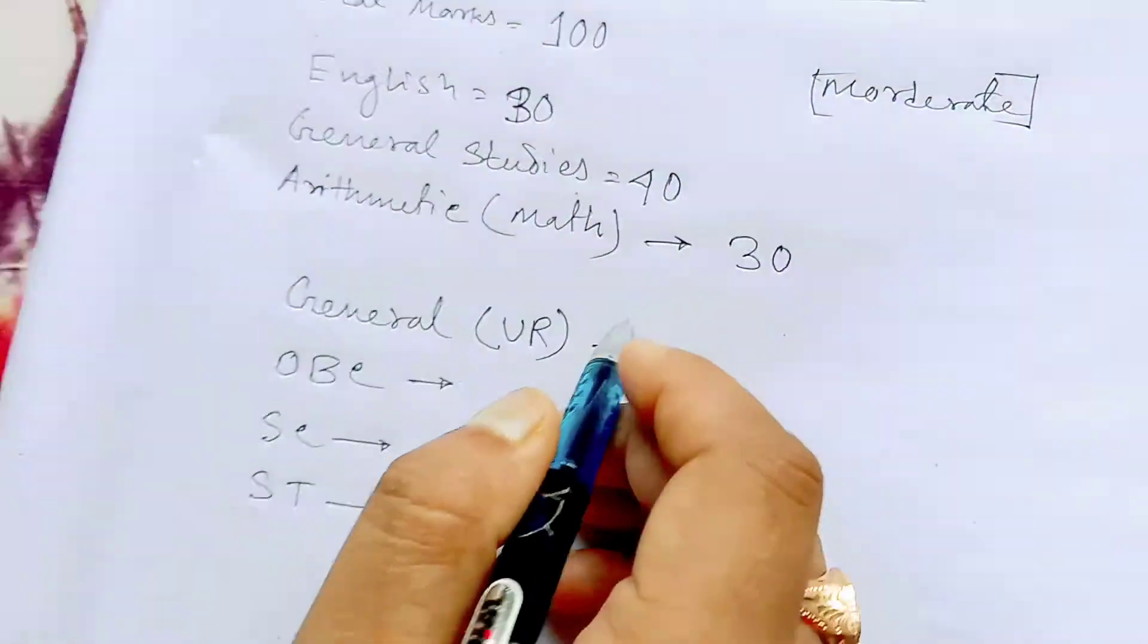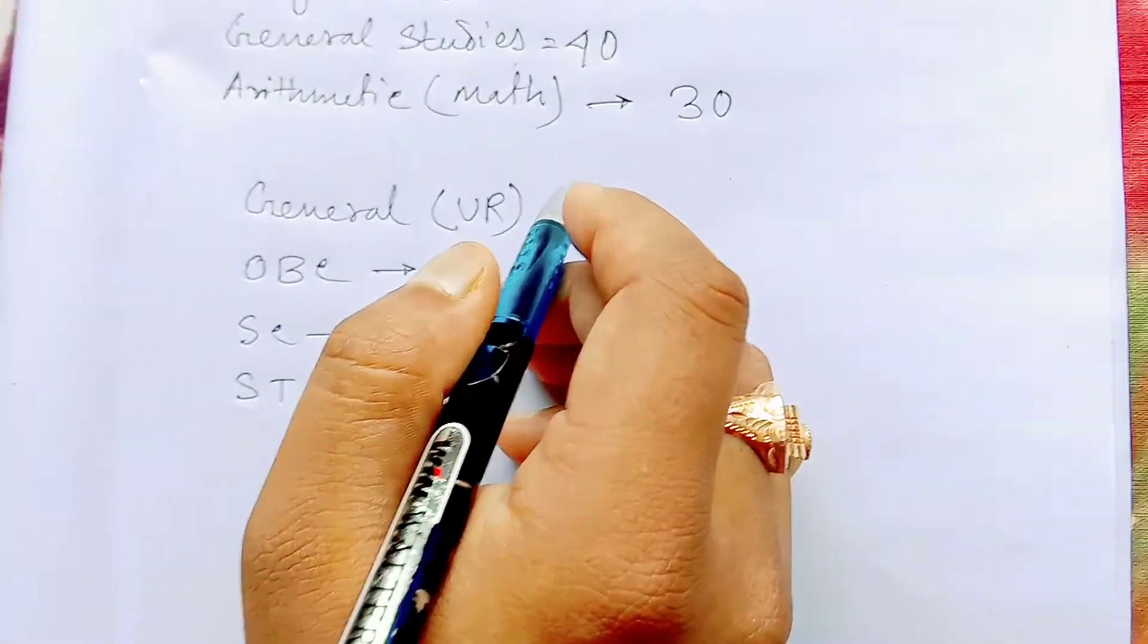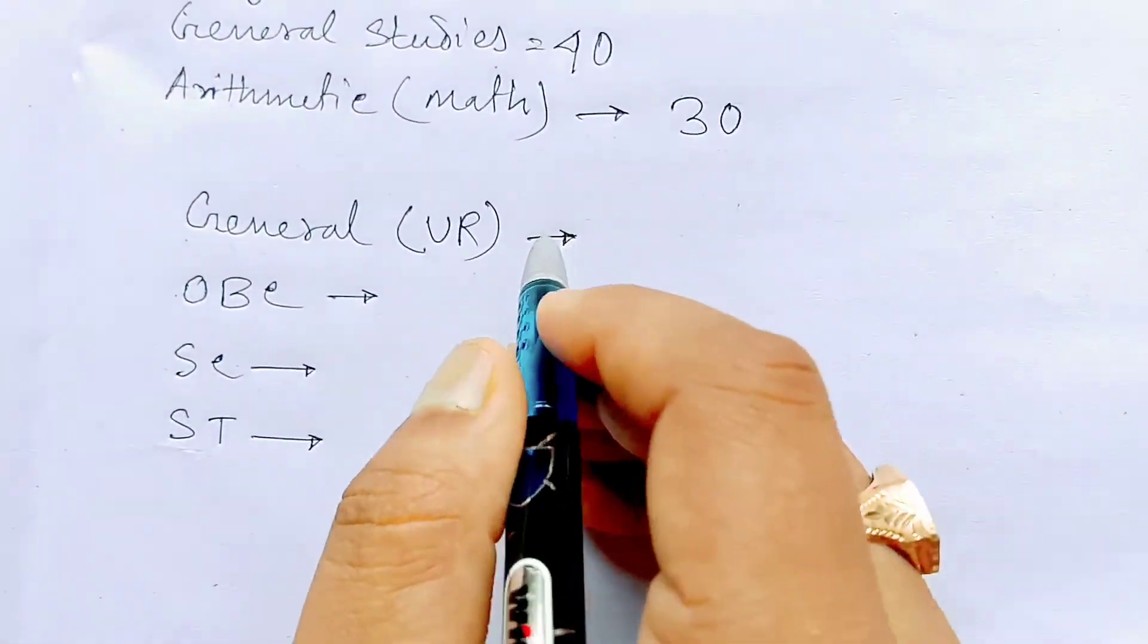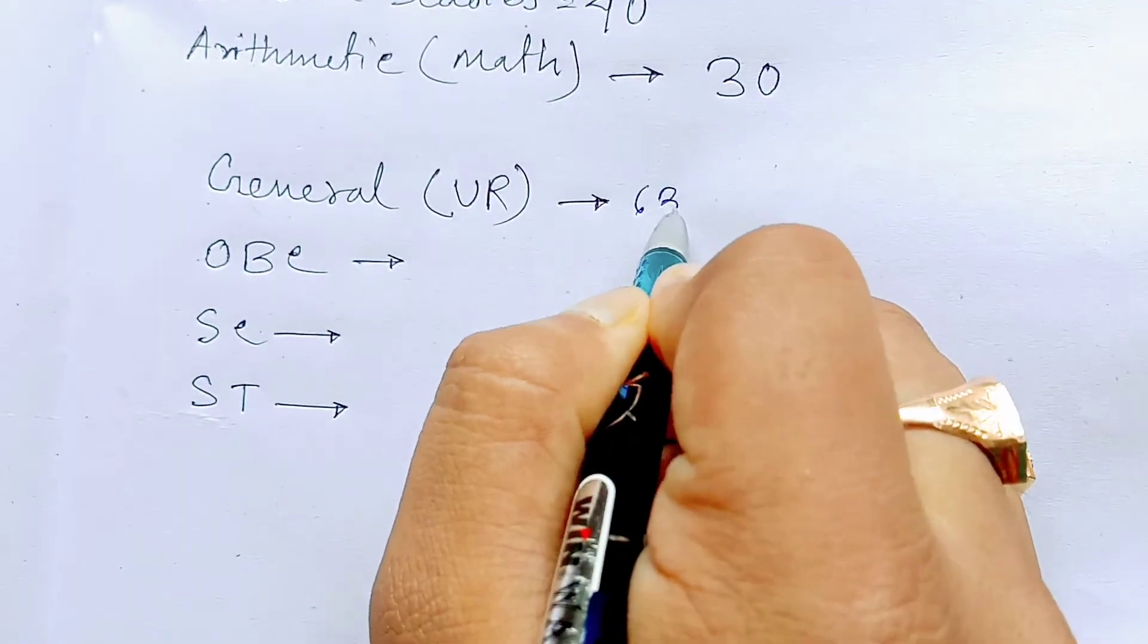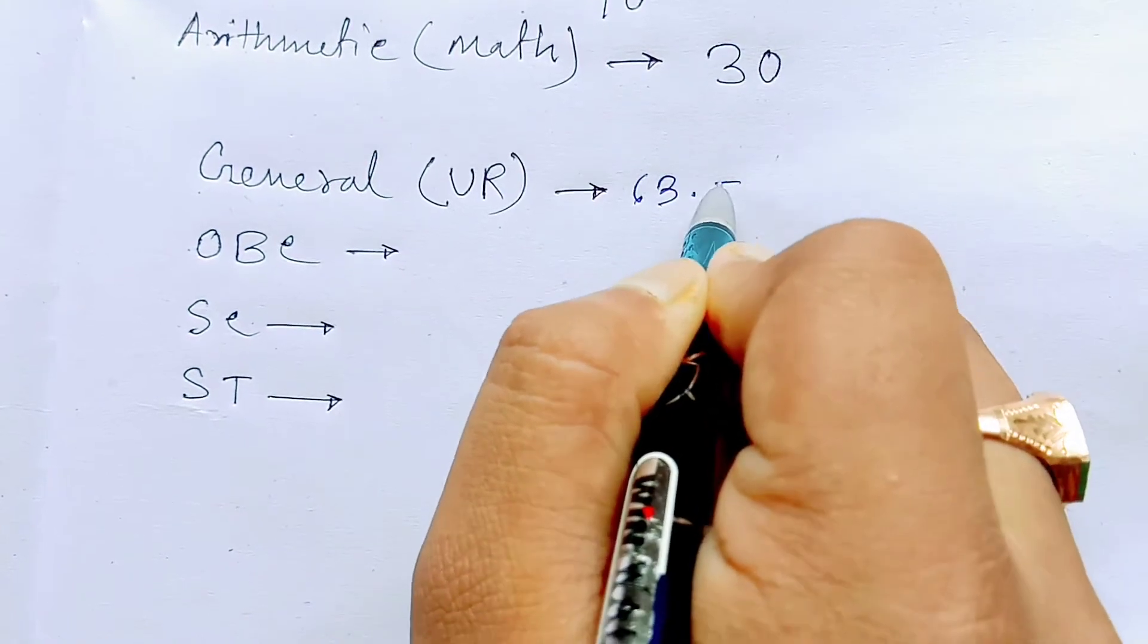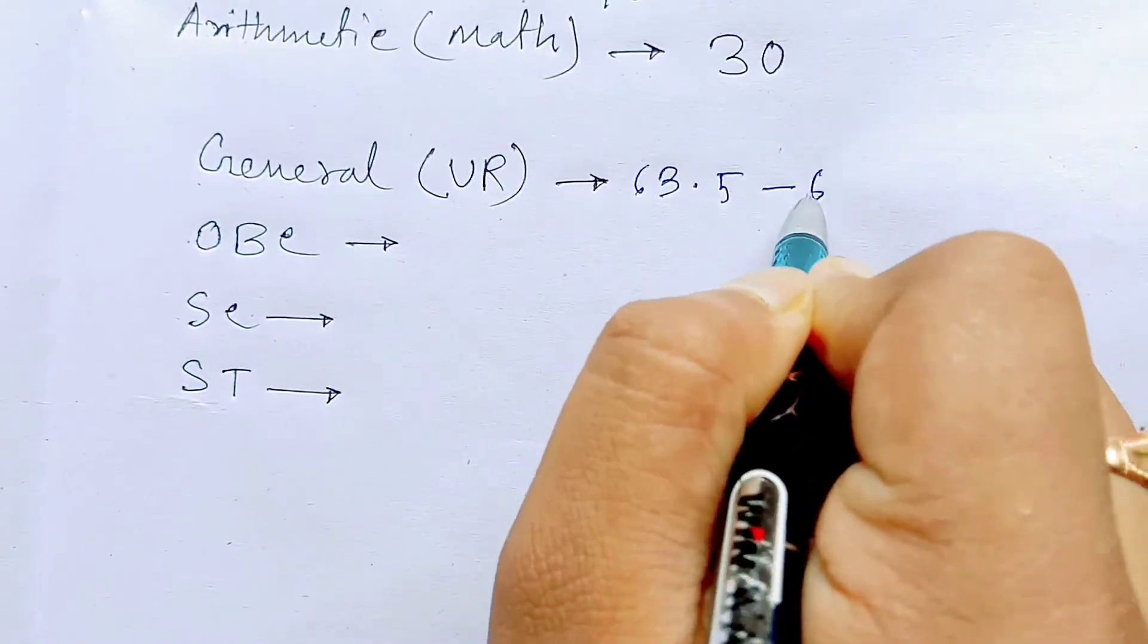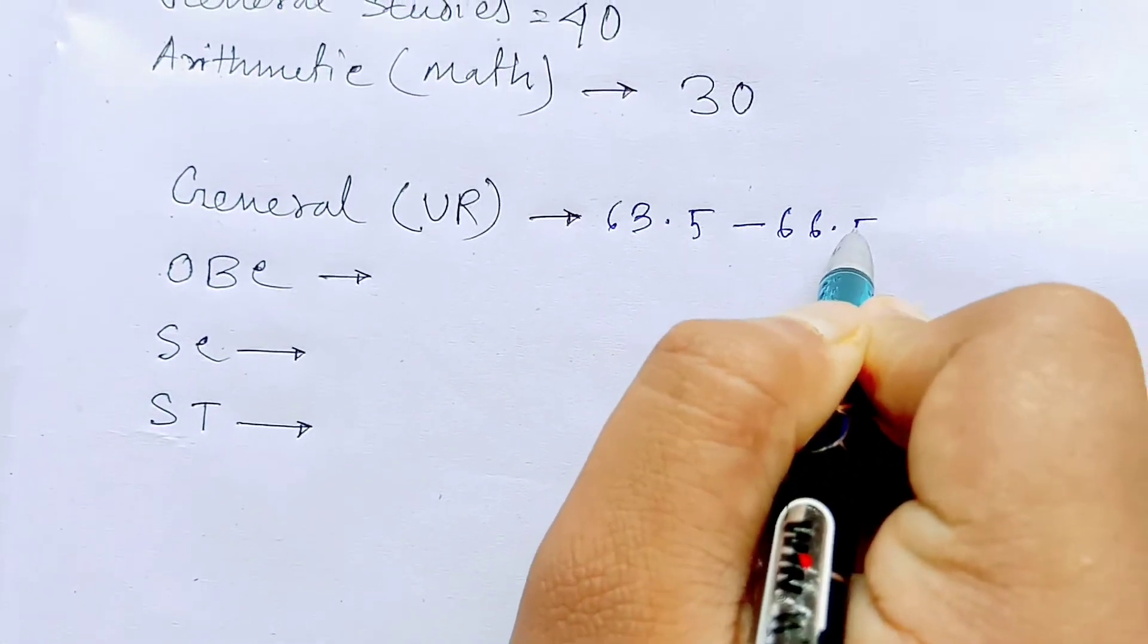Let's see the final cut-off. The cut-off is 63.5 to 66.5.